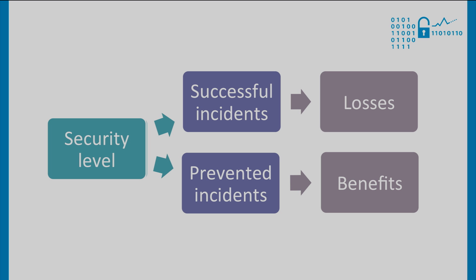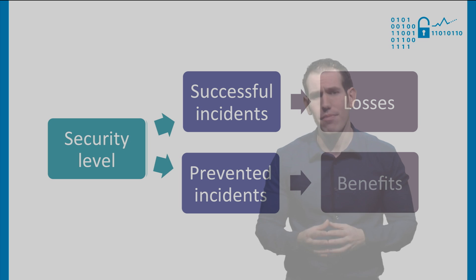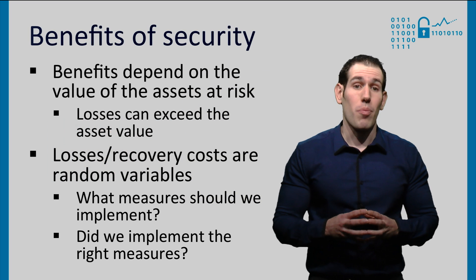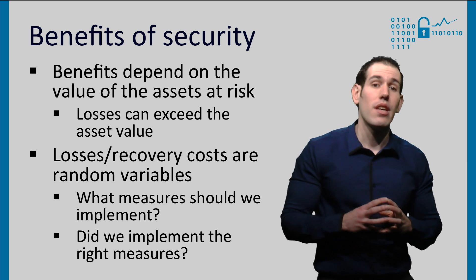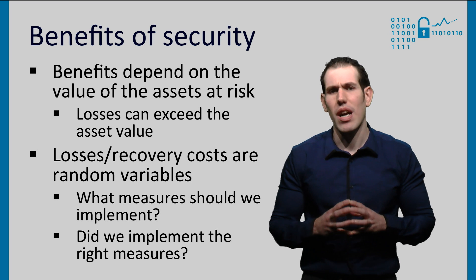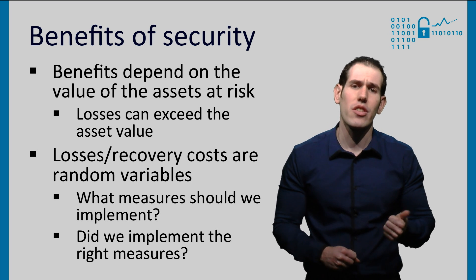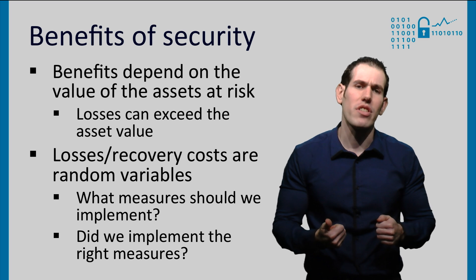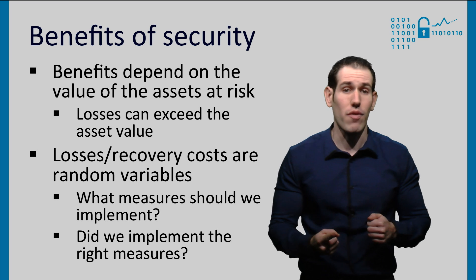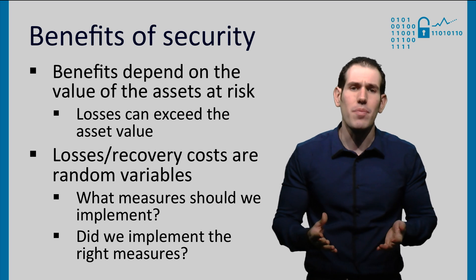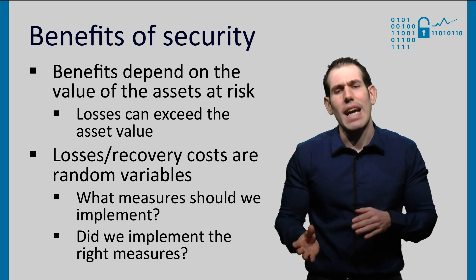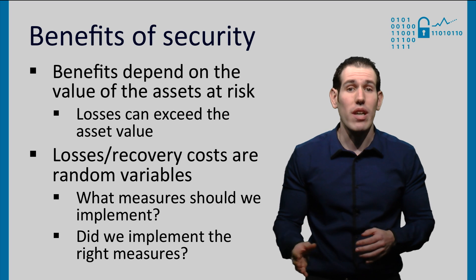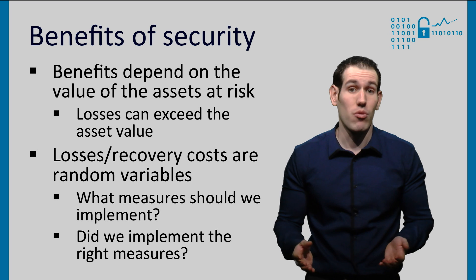However, these reductions could be due to a change in the attacker's behavior rather than the deployed security measures. To account for the benefits of security measures, we need to determine the monetary value of the assets. Often these values are estimated based on three primary factors: the overall value of the asset to the organization, the immediate financial loss impact of losing the asset, and the indirect business impact of losing the asset. Therefore, these estimates become stochastic, due to the random nature of losses, and raise questions like: what are the right security measures to implement, or did we implement the right measures?